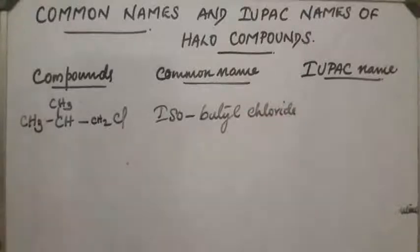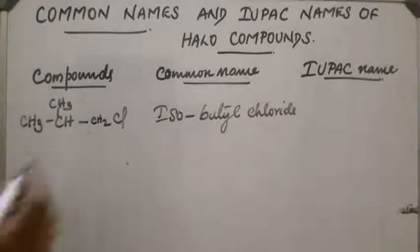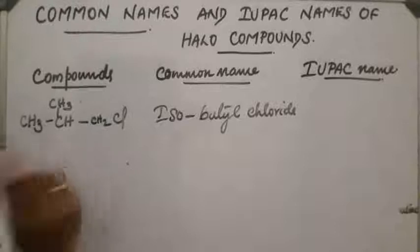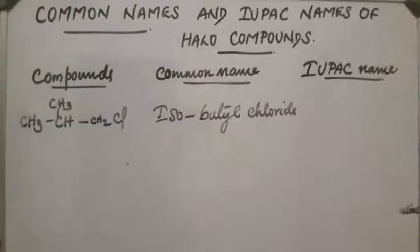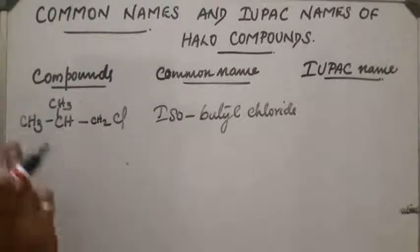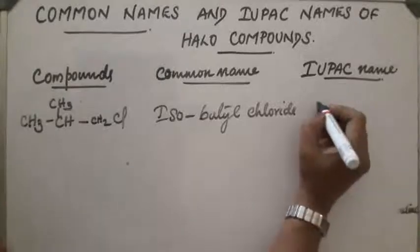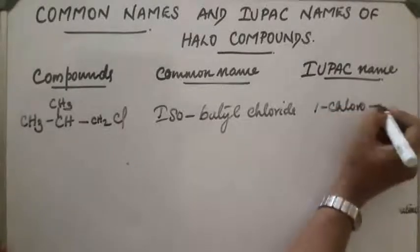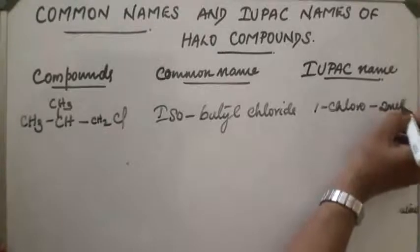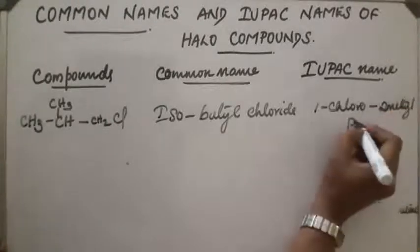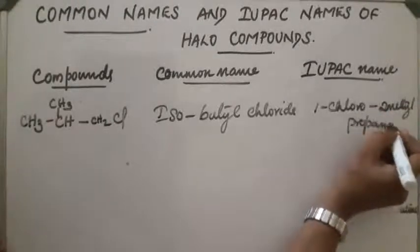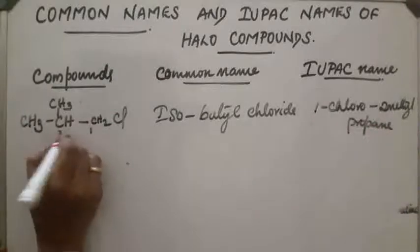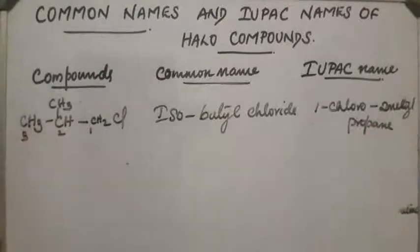For the IUPAC name, numbering gives positions 1, 2, 3. At the second position there is a methyl group, and chloro is at position 1. So the IUPAC name is 1-chloro-2-methylpropane.